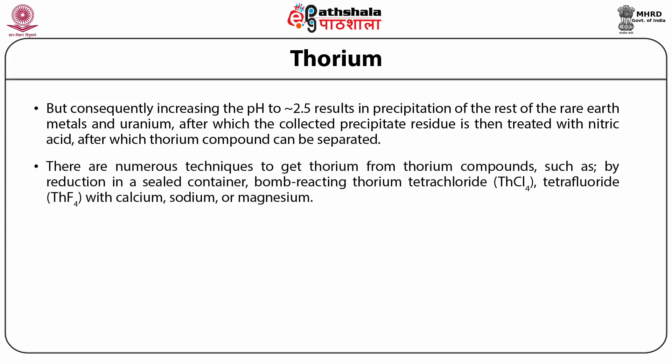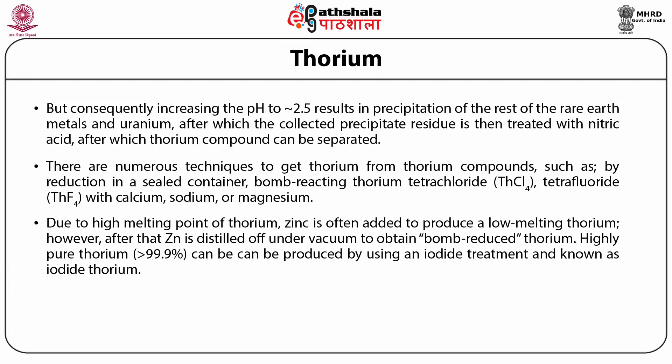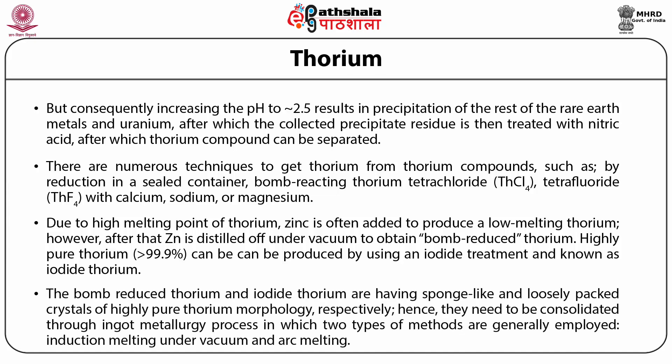There are numerous techniques to get thorium from thorium compounds, such as by reduction in a sealed container, bomb-reacting thorium tetrachloride or tetrafluoride with calcium, sodium or magnesium. Due to the high melting point of thorium, zinc is often added to produce a low melting thorium alloy. After that, zinc is distilled off under vacuum to obtain bomb-reduced thorium. Highly pure thorium can be produced by using an iodide treatment known as iodide thorium.